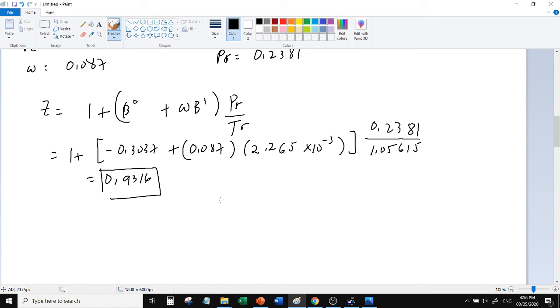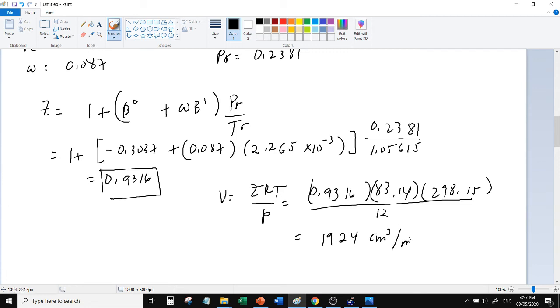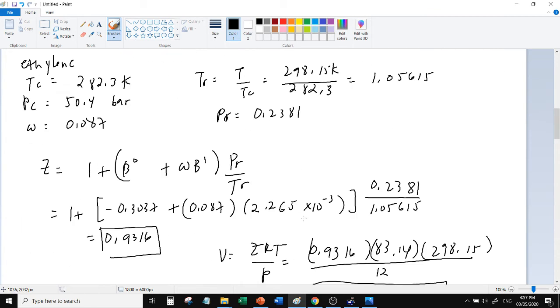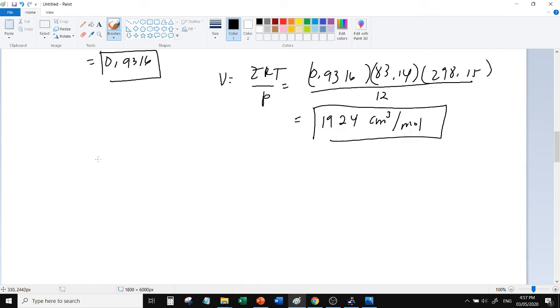Compare this to letter A earlier: 0.929. This is 0.9316. For its V, if we solve for V using ZRT over P, substitute all the values. You'll get V as 1924 cm cubed per mole. Compared to earlier 1919, this is 1924. Okay, letter C.